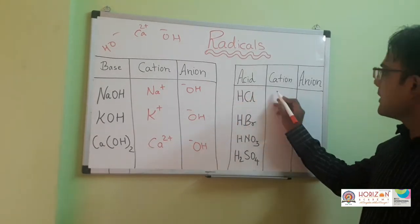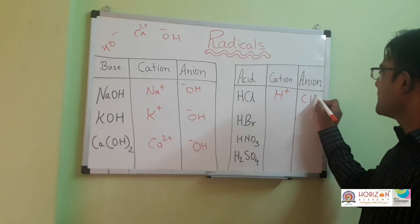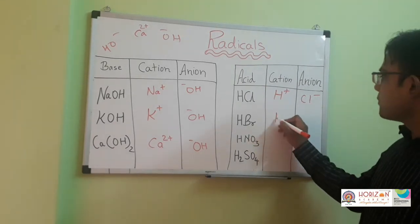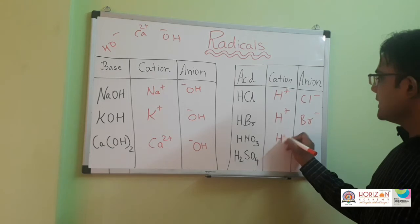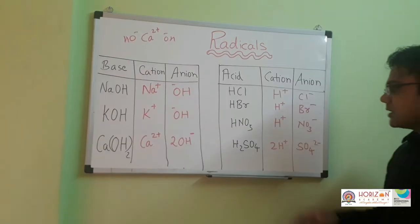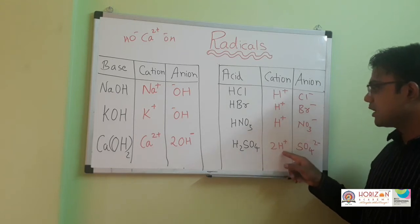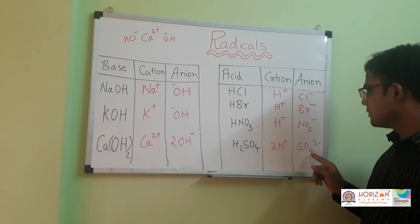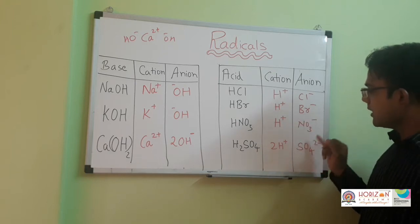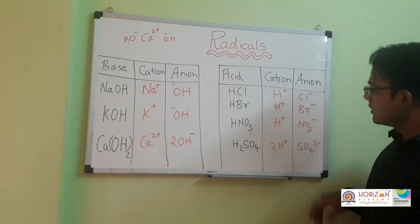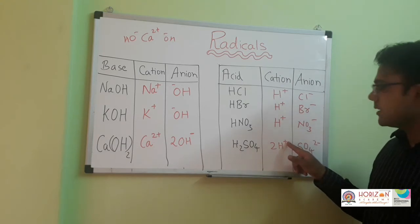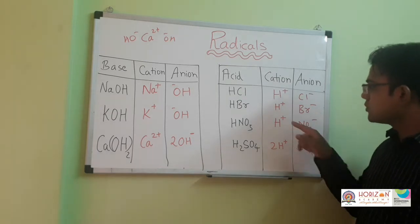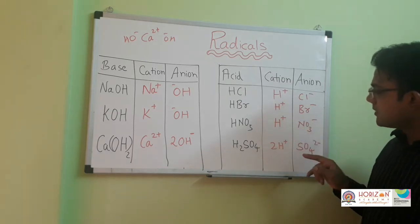Now let us see some acids. HCl is formed by H plus and Cl minus — both are radicals. HBr is formed by H plus and Br minus. HNO3 is formed by H plus radical and NO3 minus radical. In H2SO4 there are two hydrogen ions H plus and SO4 2 minus. The number of positive signs and negative signs must be equal: two H plus means two plus signs, therefore SO4 has two minus signs.